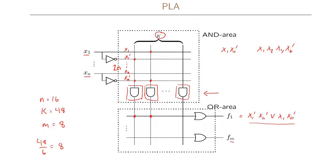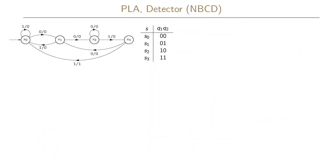Because of that, it is essential that we minimize our functions as much as we can, and hopefully also use simultaneous minimization of different functions. Let us look at an example where we use a PLA to implement the state transition graph for our detector problem, using NBCD coding for our state variables.